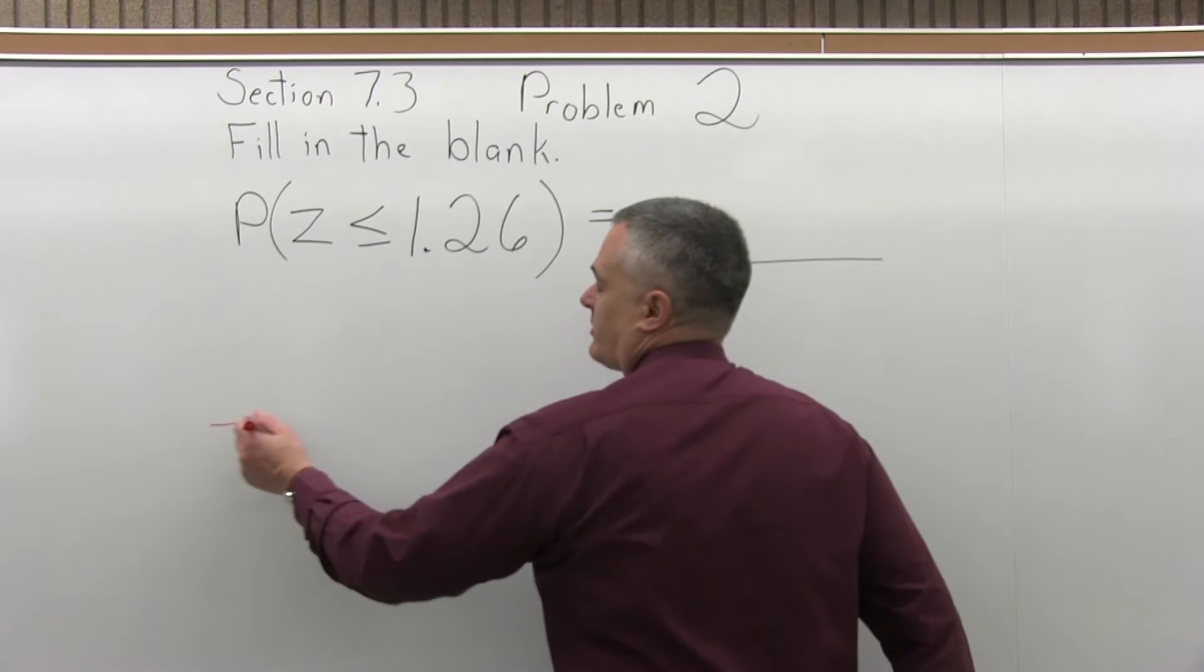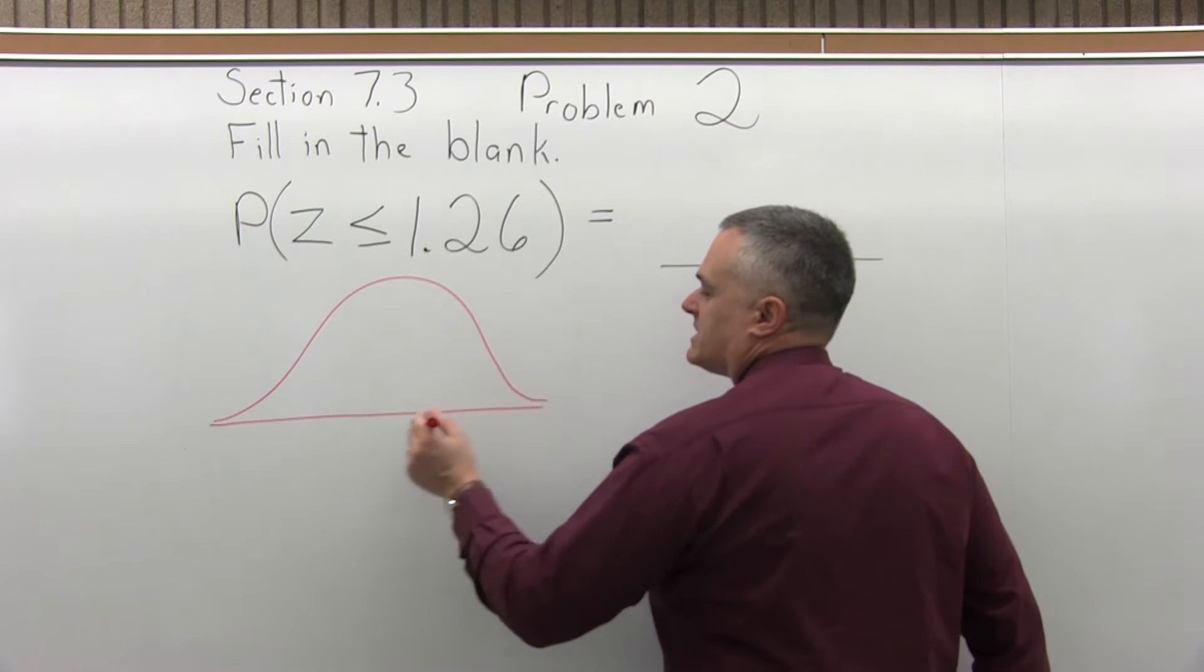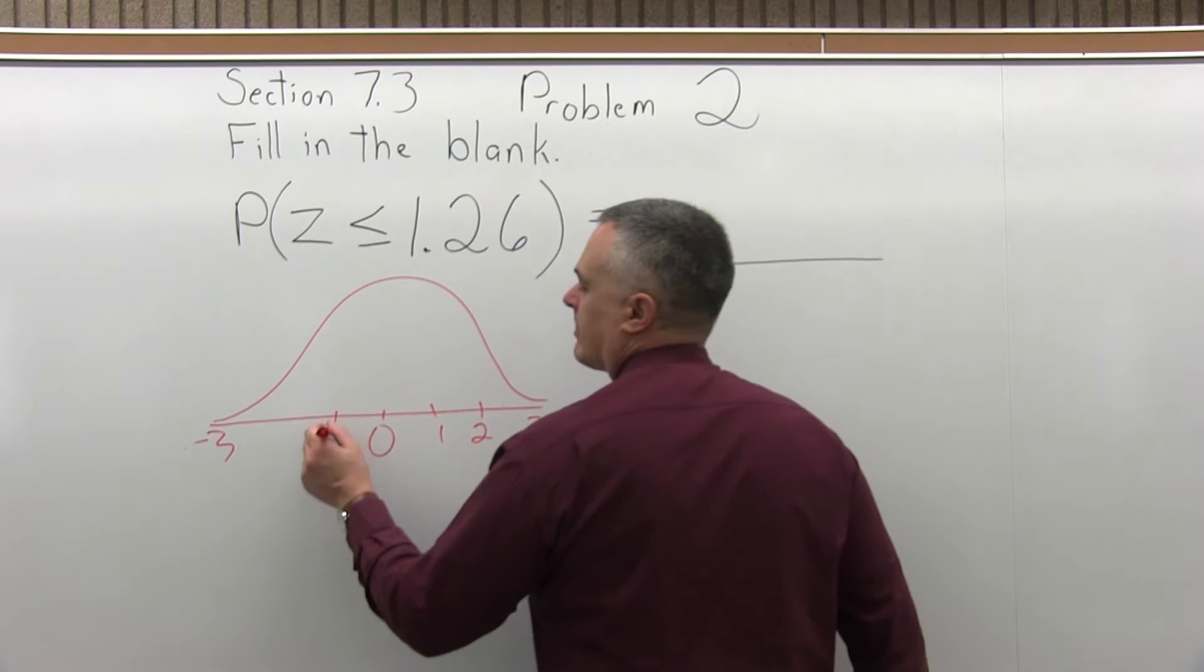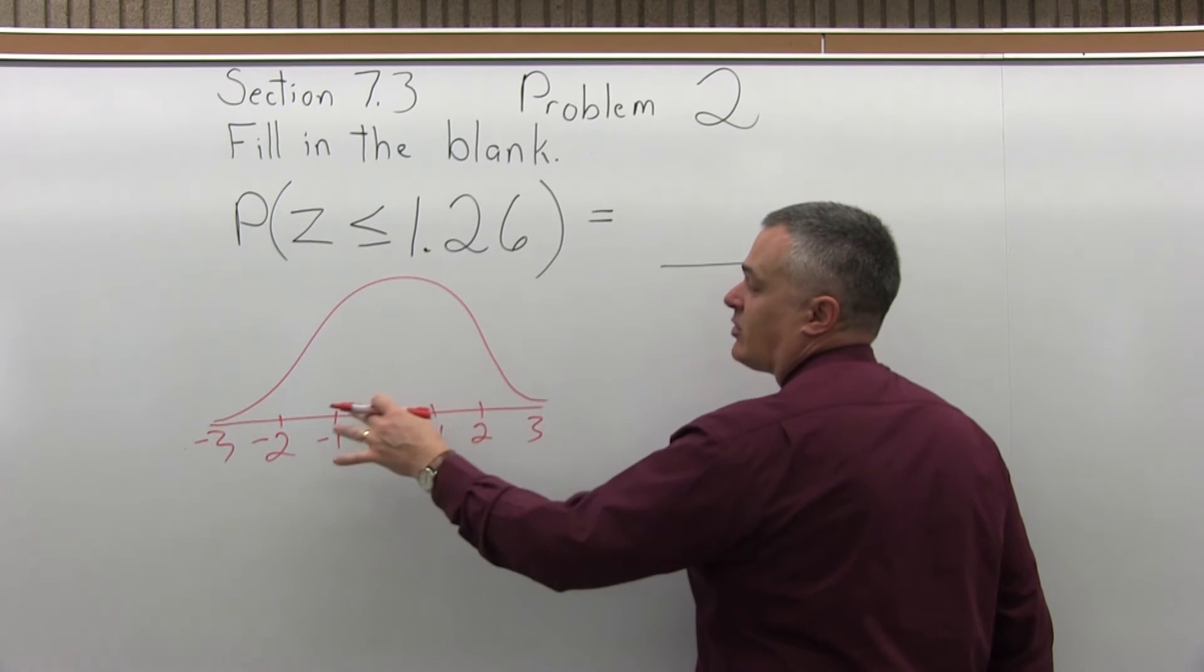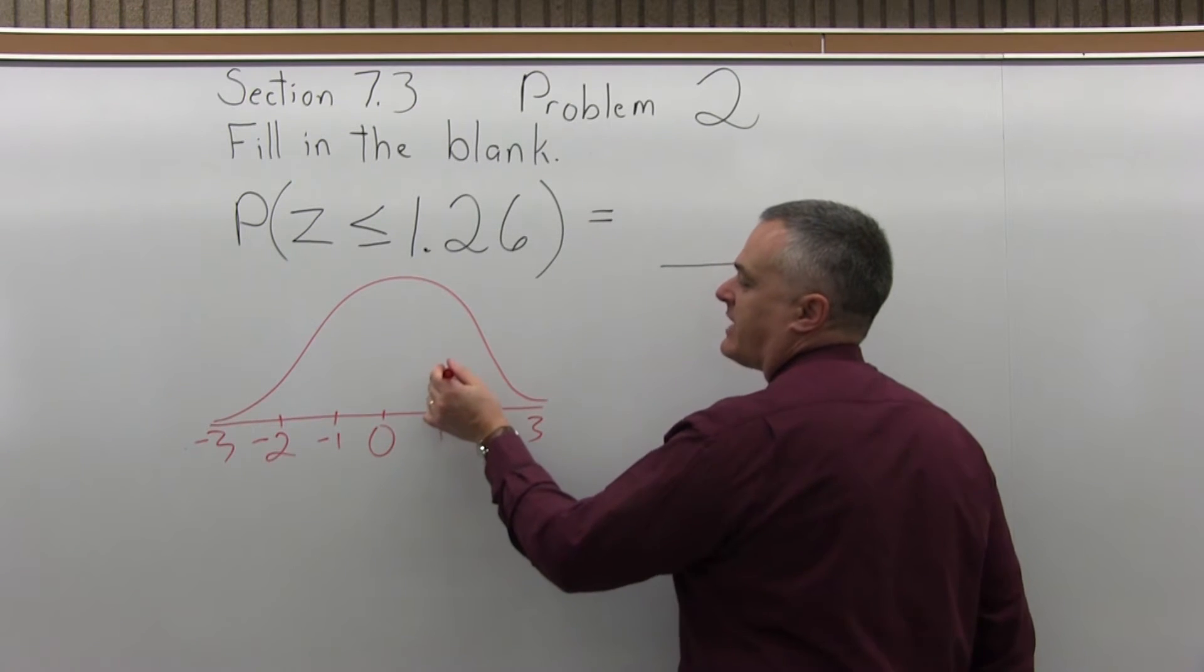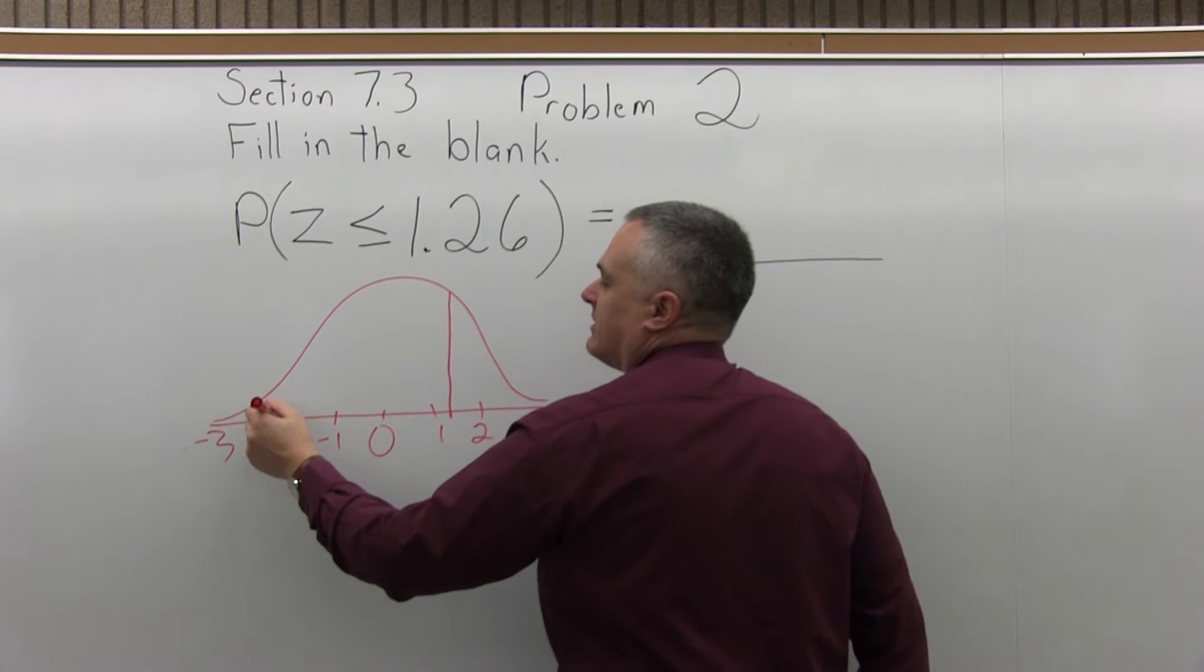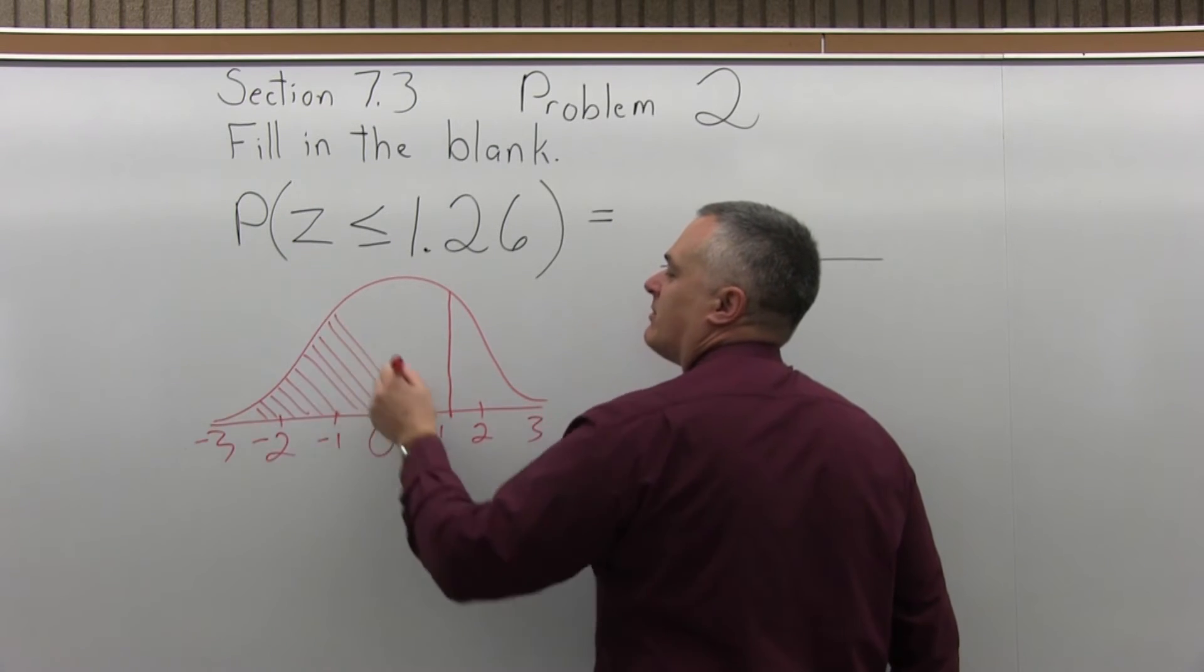So first of all, what are we trying to find? You don't have to draw the picture, but for some people it really helps. So let's draw a bell curve. And the 1.26 is how far along the bottom you are. It's 1.26 standard deviations above average because it's positive. And we want the probability of being less than that, so the area to the left of it. So the question is asking us to find this probability.